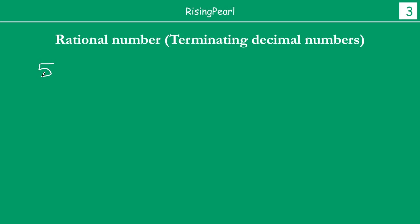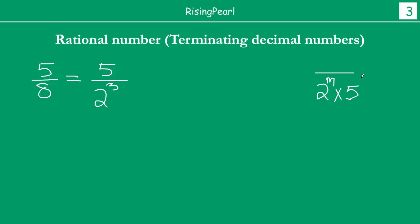Why did I pick 5 by 8? The reason is that the denominator here is 2 to the power 3. So this fits in — remember that we are trying to have the denominator of the form 2 to the power m times 5 to the power n. So what can we tell about the decimal expansion without actually doing the division? We are trying to predict, if we can, about the decimal expansion — will it be terminating or non-terminating?